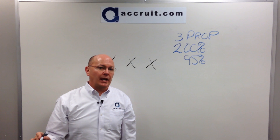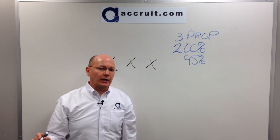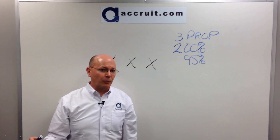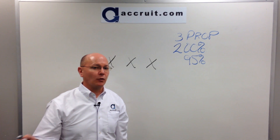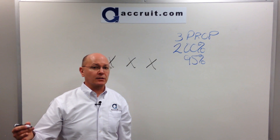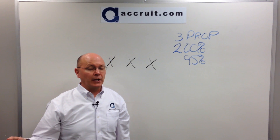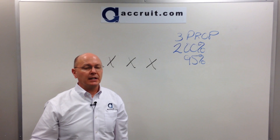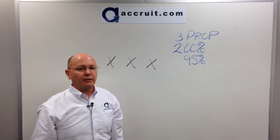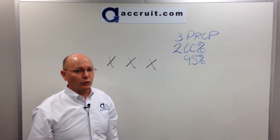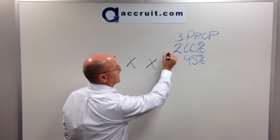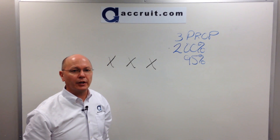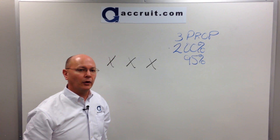But what if you cannot keep your identification list to three properties or less? What if you need to identify four, five, six, or even 50 properties? You can do that, but then you have to follow another sub-rule under the identification process, commonly referred to as the 200% rule.